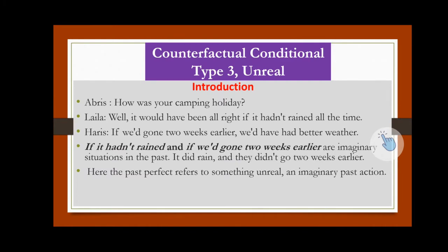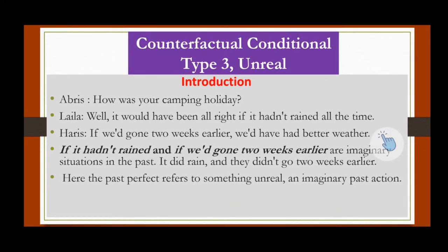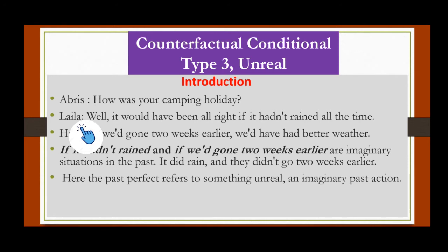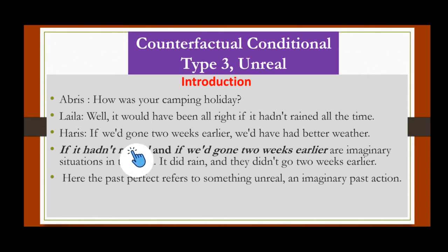Counterfactual conditional, or Type 3, is called 'unreal.' Before this we talked about Type 2 unreal in the present, and now we are discussing Type 3 unreal in the past. Here are some examples: Leila says, 'Well, it would have been all right if it hadn't rained all the time.' Harris says, 'If we had gone two weeks earlier, we would have had better weather.'